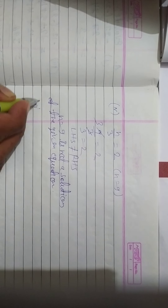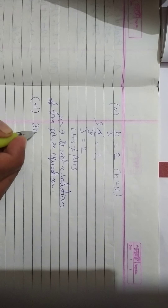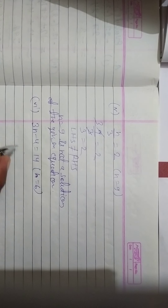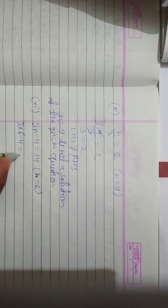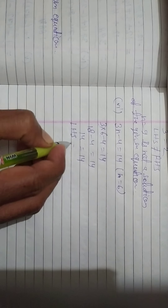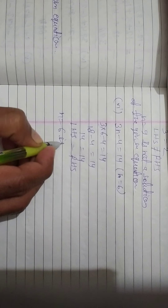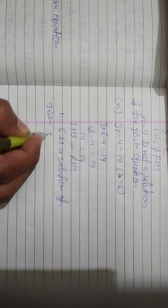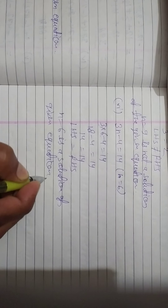The last question is question number 6: 3n minus 4 is equal to 14, where n equals 6. Substituting the value of n as 6: 3 times 6 minus 4 equals 14. 3 times 6 is 18, so 18 minus 4 equals 14. Therefore 14 equals 14. LHS is equal to RHS, so n equals 6 is a solution of the given equation.